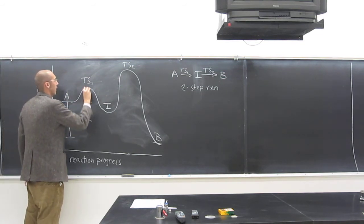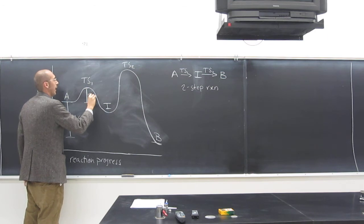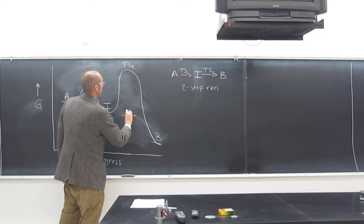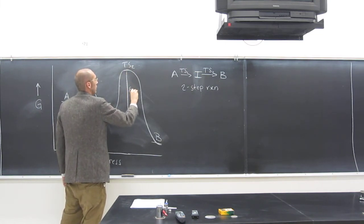What's this from here to here? EA. EA1, right? And this one? EA2. EA2.